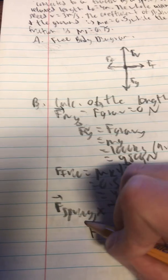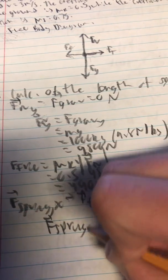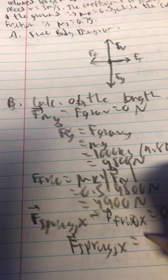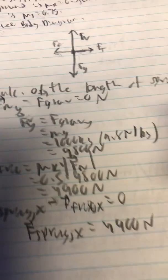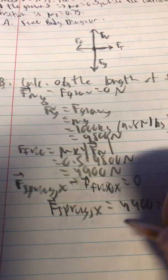So that means that F spring in the x direction should equal 4900 newtons which is the force of friction in the negative x direction.